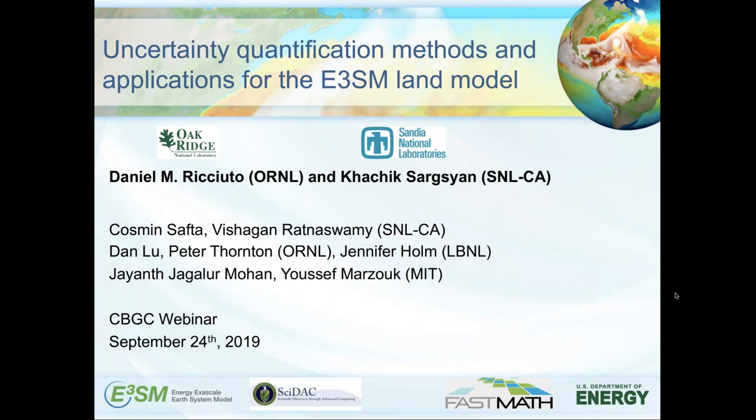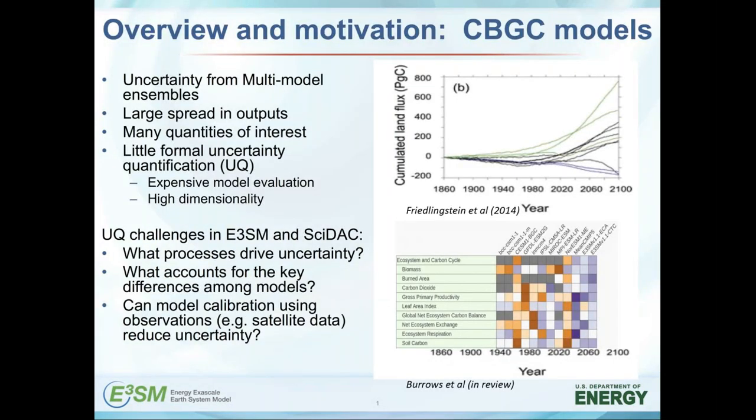I wanted to start with a little bit of overview and motivation. When talking about coupled biogeochemistry models, most of our current understanding about uncertainty is from multi-model ensembles from many modeling groups. We often see a very large spread in things like cumulative land flux over the next century. There are many quantities of interest we're interested in, such as biomass, gross primary productivity, and leaf area index — just a small subset of total variables we look at.